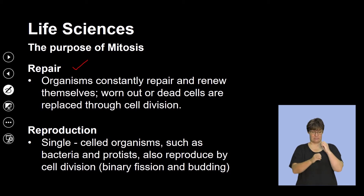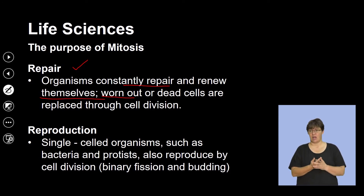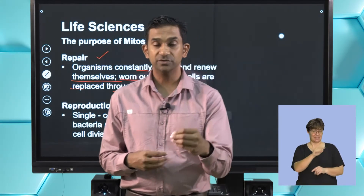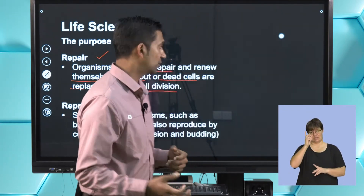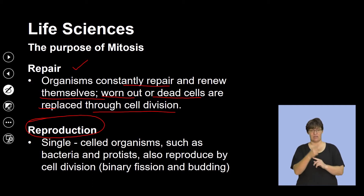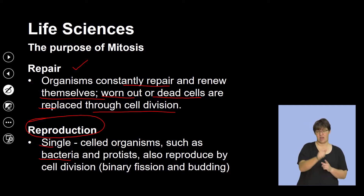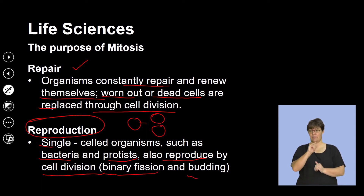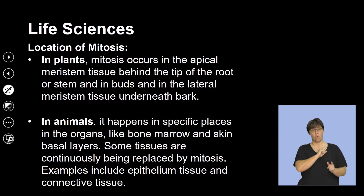Repair is also an important process of growth and development. Organisms constantly need to repair and renew themselves — worn-out tissue or dead cells are replaced through cell division. We constantly lose our skin cells and may experience injury and damage to tissues that are repaired through mitosis. Reproduction is the third reason: single-celled organisms such as bacteria can reproduce by cell division, where a single cell divides and forms two new cells through binary division or budding.